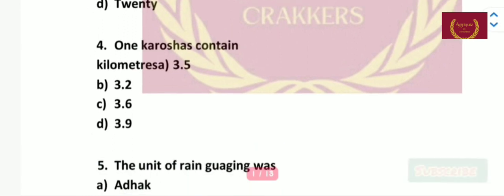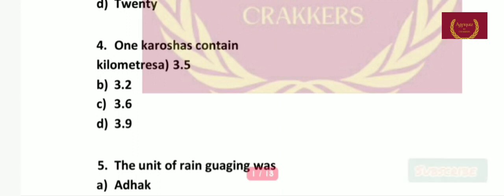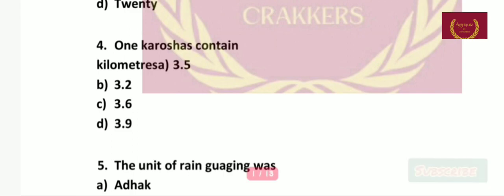One Croosh contains how many kilometers — 3.5, 3.2, 3.6, or 3.9? The correct answer is 3.2.